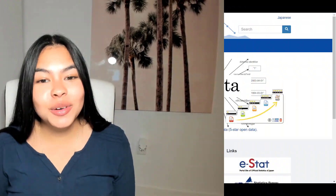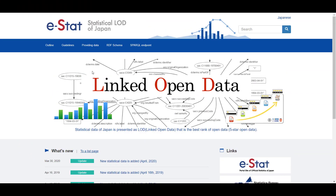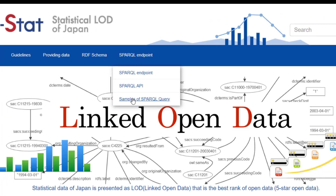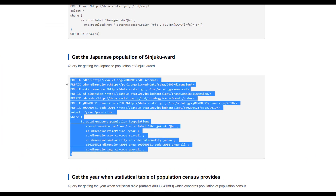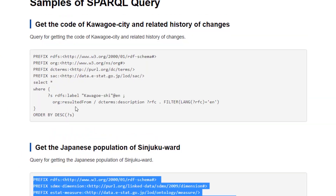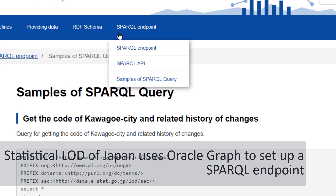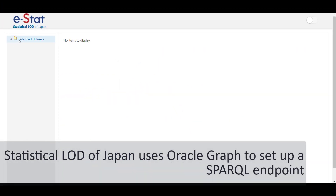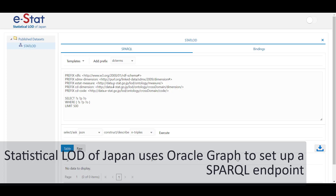And if you're a citizen data scientist, you can use the SPARQL query language to write queries. Here we have the Statistical LOD of Japan's website that integrates demographic data in the country. This statistical data from cities and counties across the country can be queried using SPARQL Endpoints. This is built on top of the Oracle Graph feature that is part of the Oracle database and provides a query editor like this. Here you can run SPARQL queries and check the results.